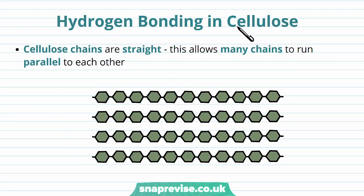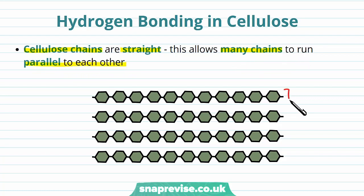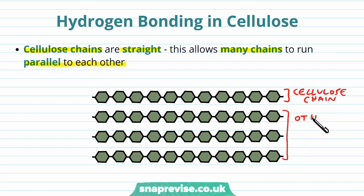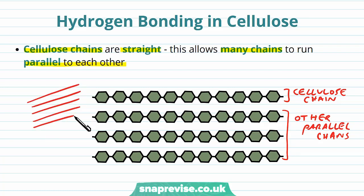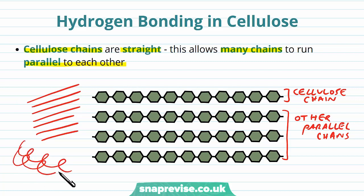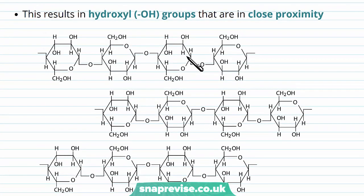We also have hydrogen bonding in cellulose, which is important for its overall integrity. Each cellulose chain is straight because of the inversion of those beta-glucoses, which means all of the chains line up parallel to each other. Here we would have one cellulose chain, and then other chains lie parallel to it. Because they're straight and following the same direction, they can line up in lots and lots of rows in a tight space. This brings hydroxyl groups, or OH groups, into close proximity to each other.